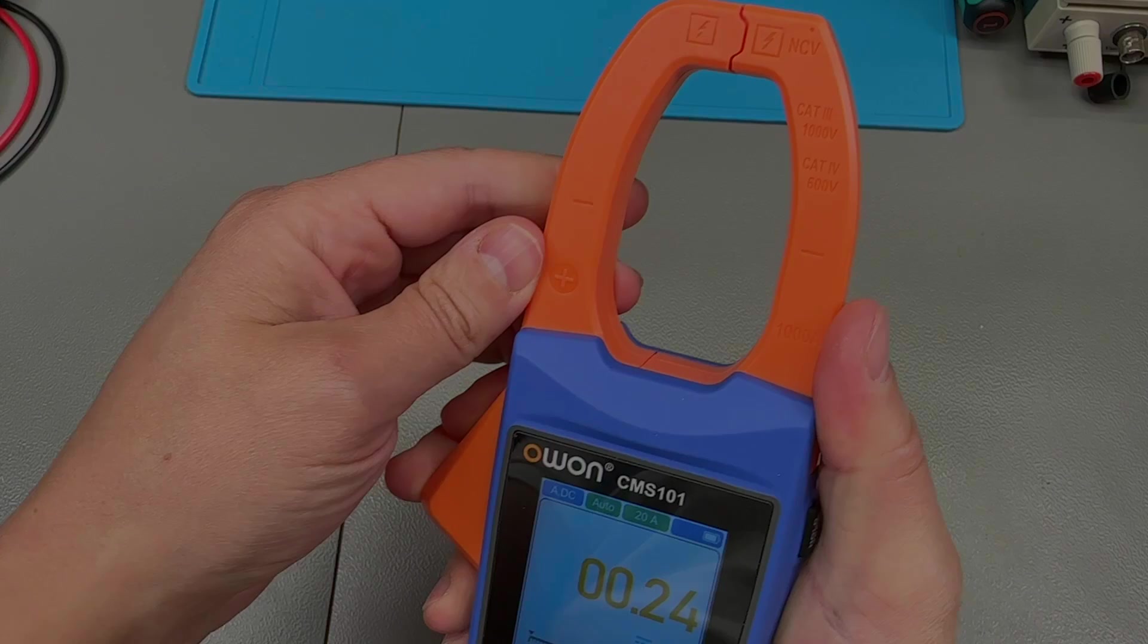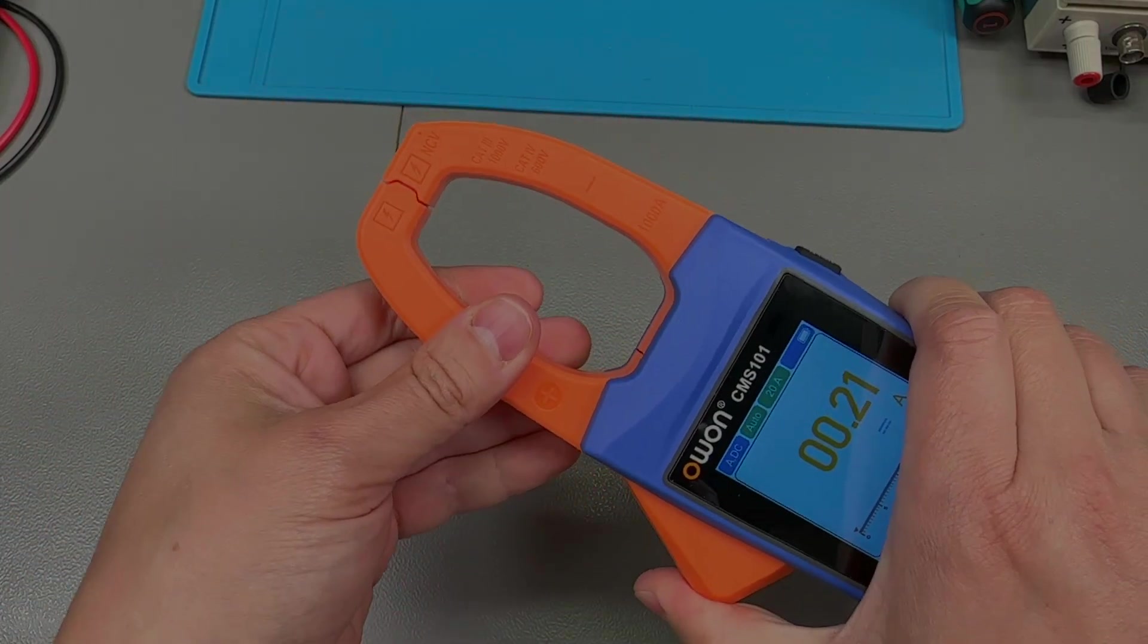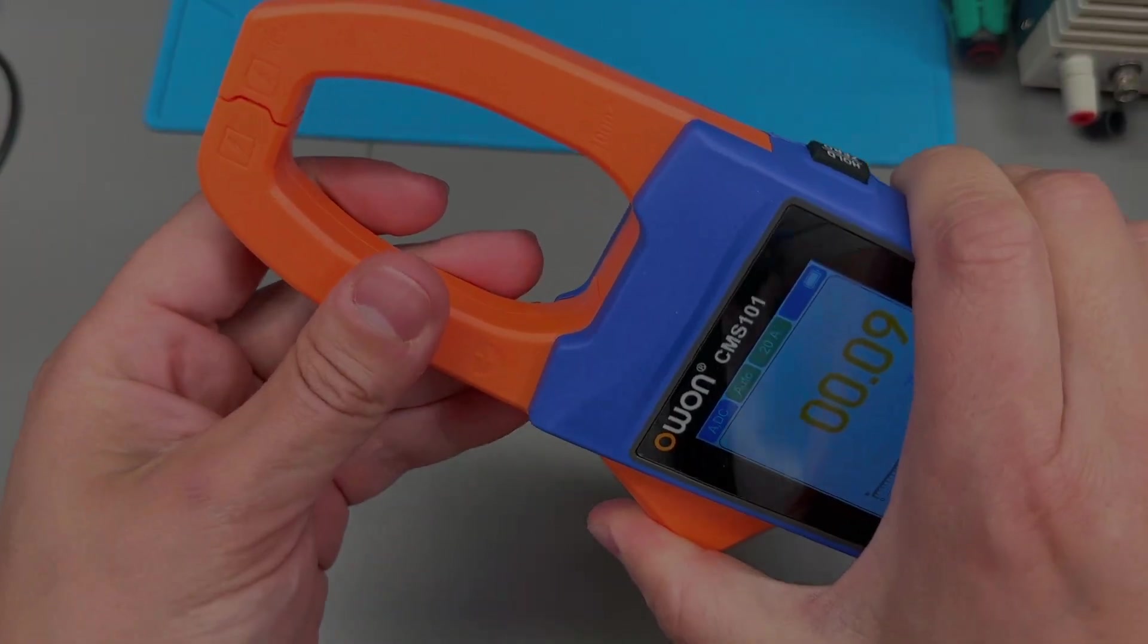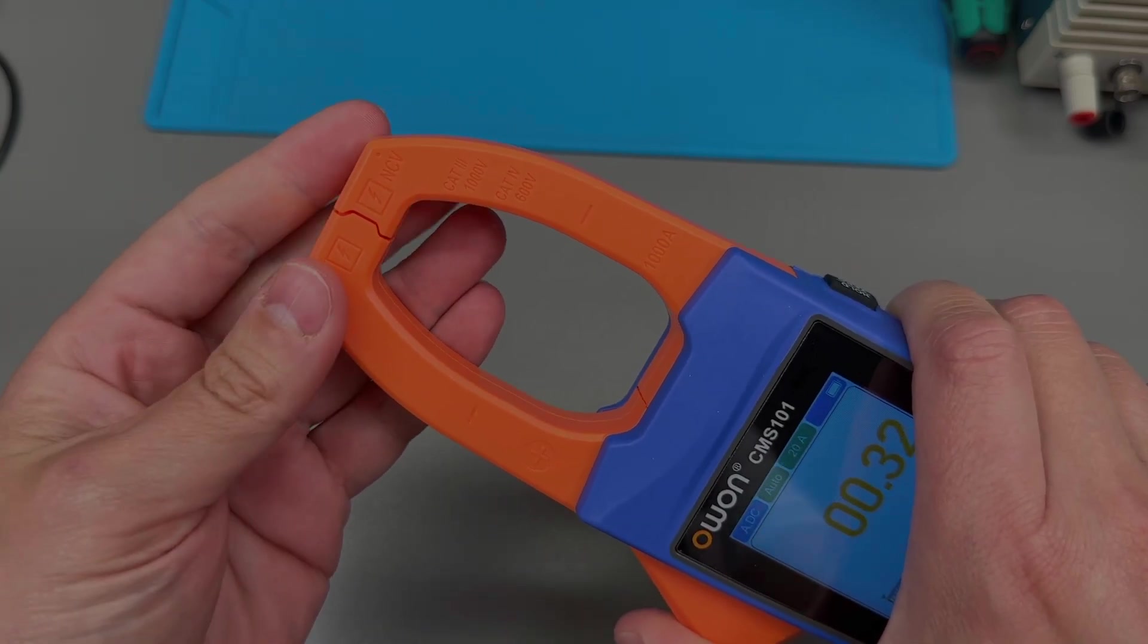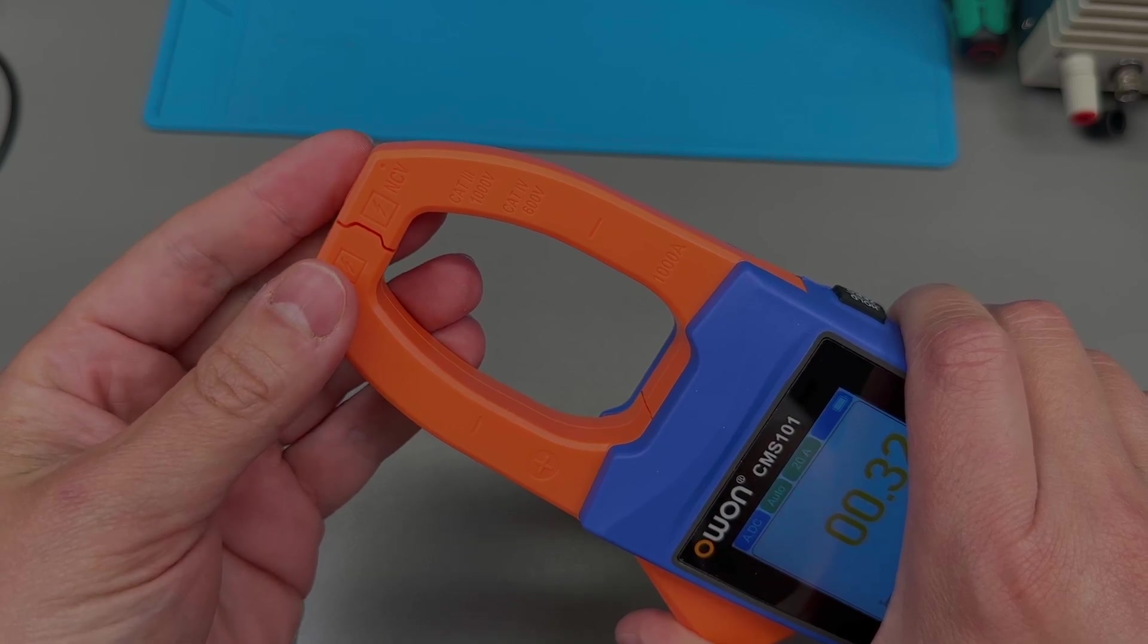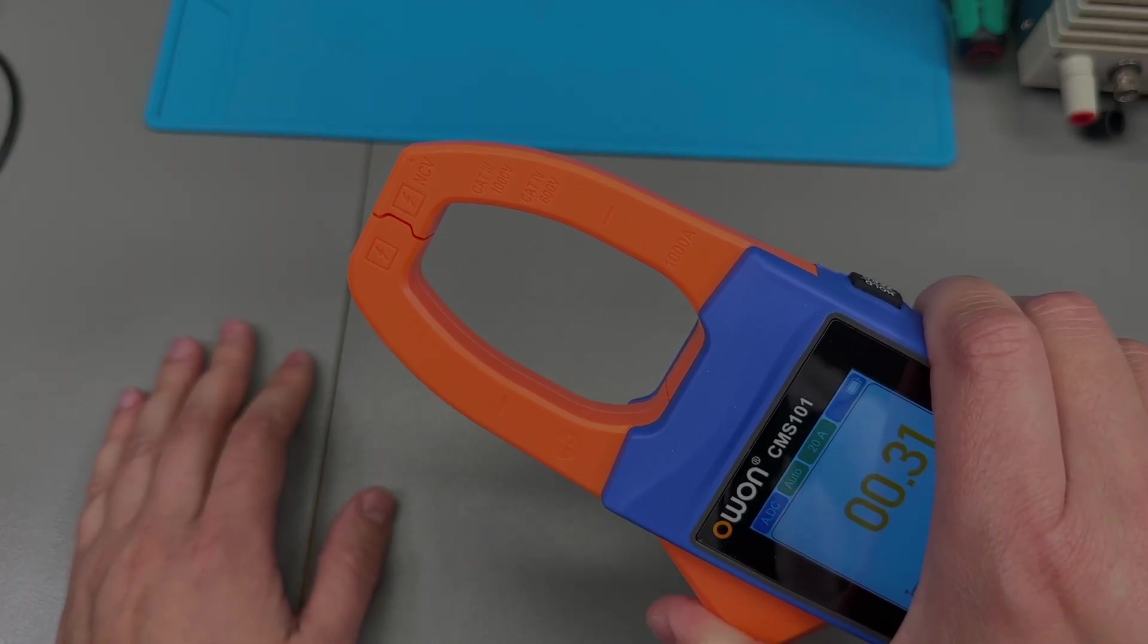At the top we have the current clamp. Has very nice spring action, feels nice and solid, and this would be used for your contactless current measurement. It can measure AC and DC from 20 amps to 1000 amps, and on the 20 amps range, the resolution is 10 milliamps.